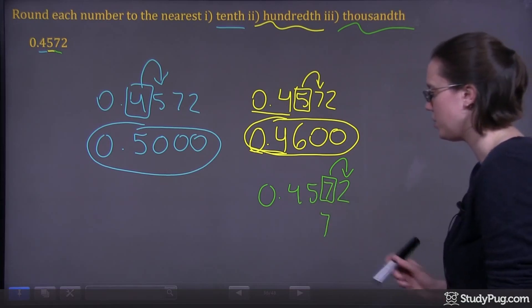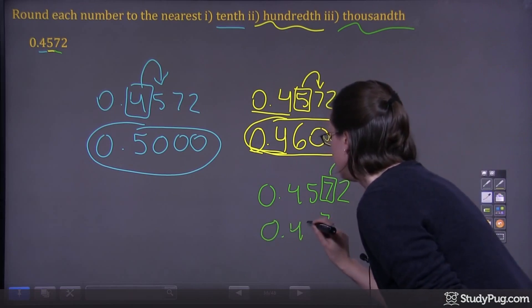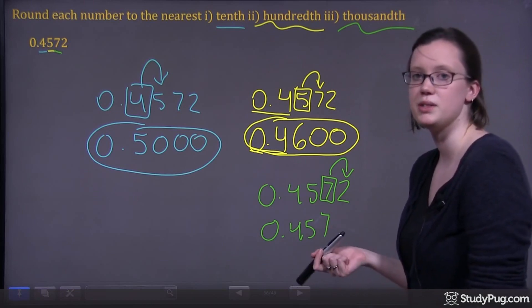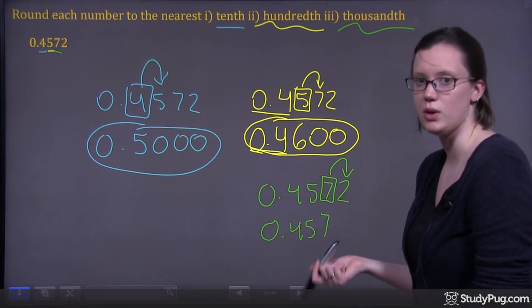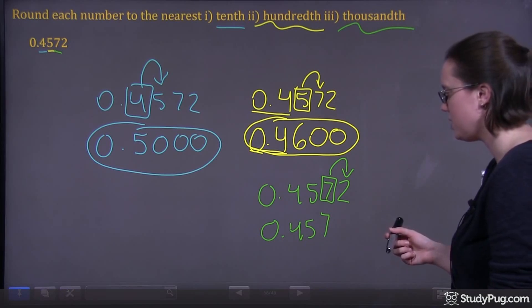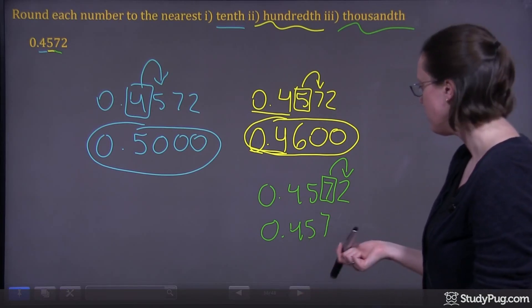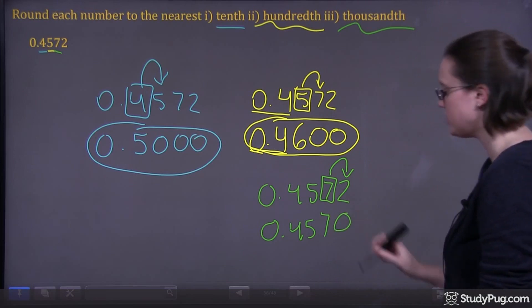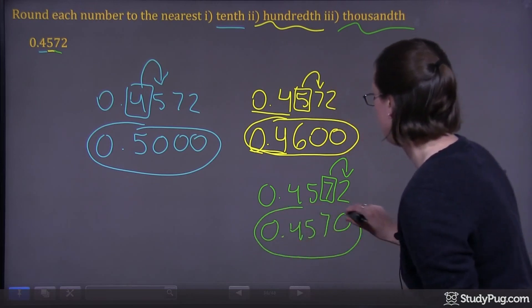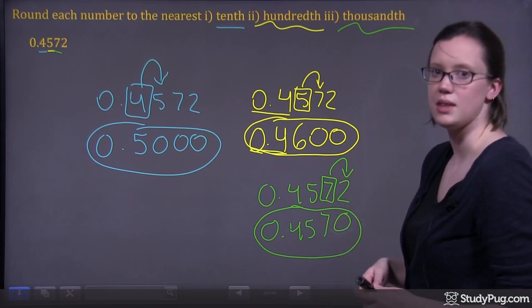Everything before that number stays the same, because anything before the place you're rounding always stays the same. So we have 0.457, and anything after the position you're rounding becomes a zero. So we have 0.4570. So that's our number rounded to the nearest thousandth.